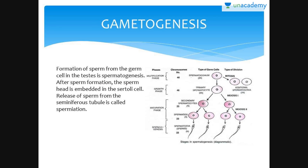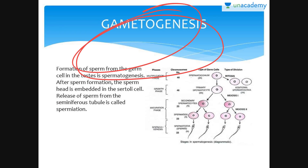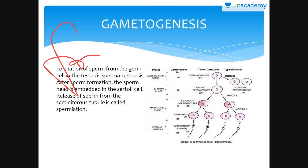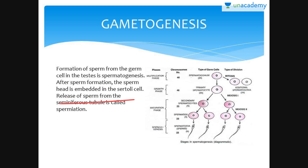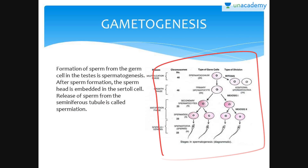Gametogenesis is the formation of gametes and it has two processes. The first is spermatogenesis — the formation of sperm from germ cells in the testis. After sperm formation, the sperm head is embedded in the Sertoli cell. Release of sperm from the seminiferous tubule is called spermiation.